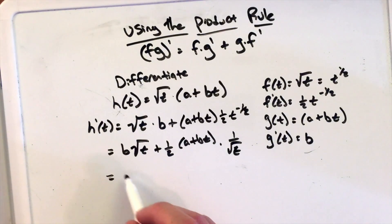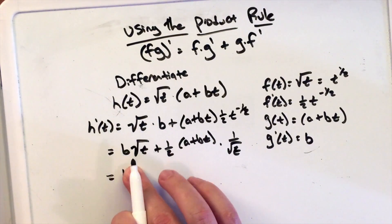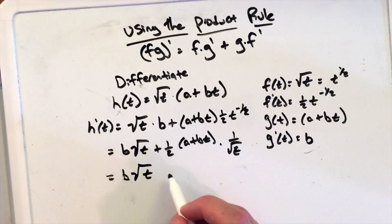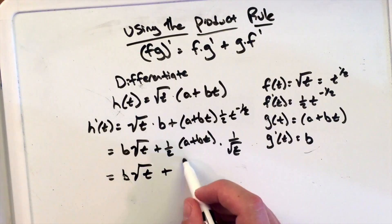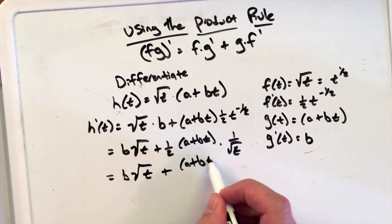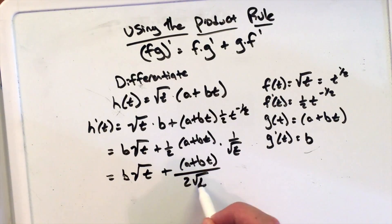Now we're going to do a final cleanup here: b square root of t, plus a plus bt, over 2 square root of t.